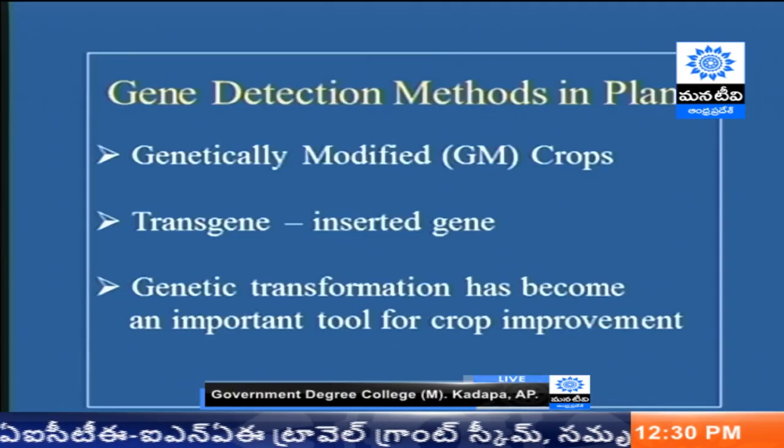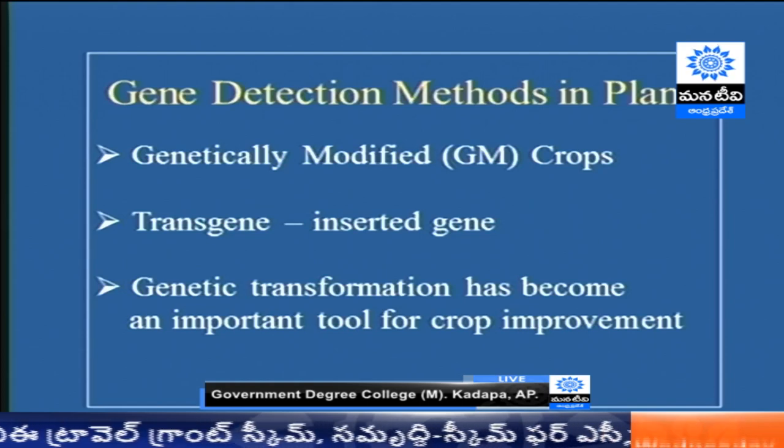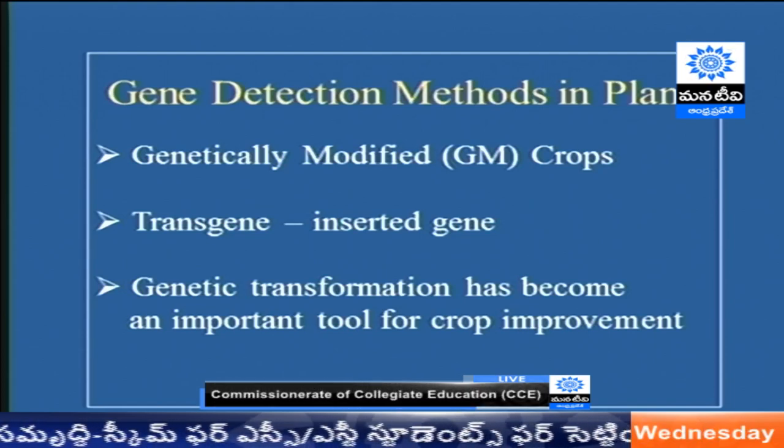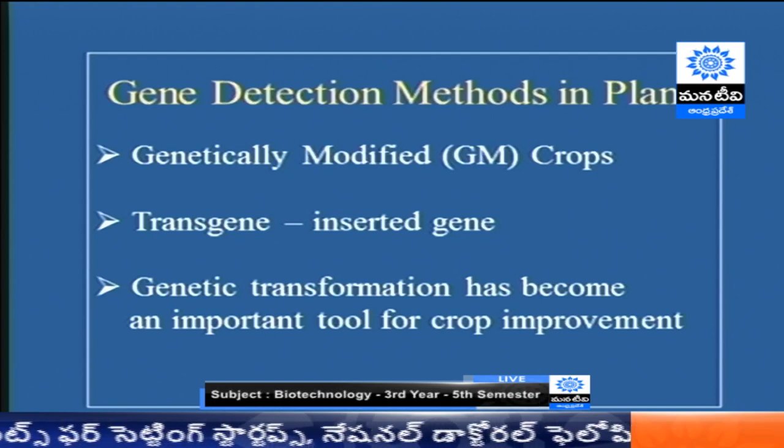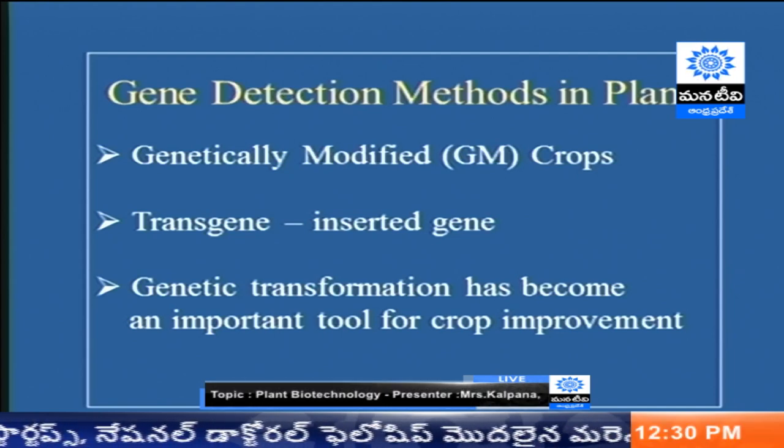Now in the second session, we discuss gene detection methods in plants. In the previous session we discussed what methods are used to transfer genetic material into the plant cell. Now, irrespective of the method used, only some cells are transformed — many other cells do not get transformed. So the first aim is to identify which cell is transformed.